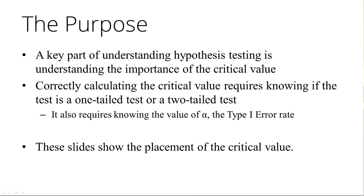The purpose here is that a key part of understanding hypothesis testing is really understanding the placement and the importance of that critical value. Correctly calculating the critical value requires that you know if the test is a one-tailed test or if it's a two-tailed test. One-tailed tests have the alternative hypothesis mu is greater than some stated value or mu is less than some stated value. For a two-tailed test, the alternative hypothesis is mu is not equal to, and those are the only options. Of course, it also requires knowing the value of alpha. So these slides show the placement of the critical value as it relates to the alternative hypothesis.